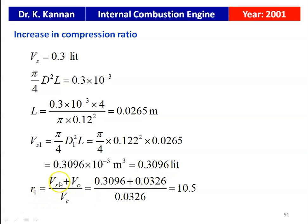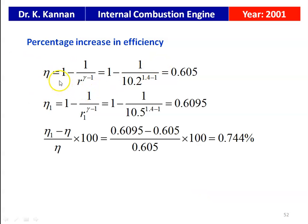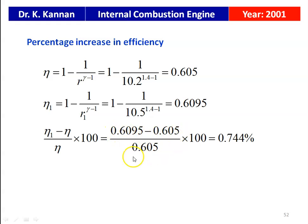The new compression ratio equals (Vs1 + Vc) / Vc. Since there is no change in the clearance volume: (0.3096 + 0.0326) / 0.0326 equals 10.5. So the new compression ratio is 10.5 versus the original 10.2. The efficiency for the original engine: η = 1 − 1/r^(γ−1) = 1 − 1/10.2^0.4 = 0.605. For the new engine η1 = 0.6095. The percentage increase in efficiency equals (0.6095 − 0.605) / 0.605 × 100 equals 0.744 percent.